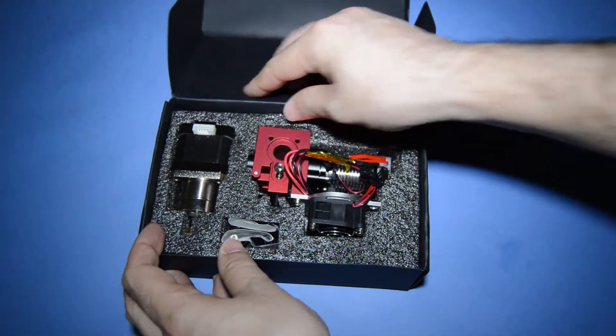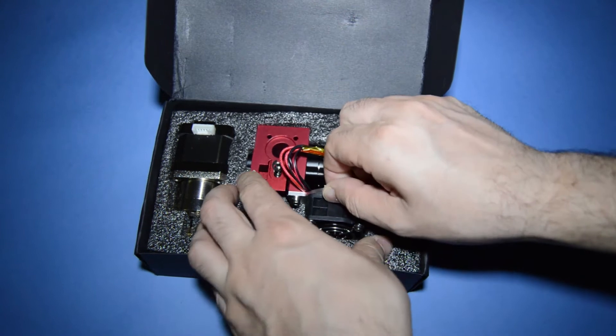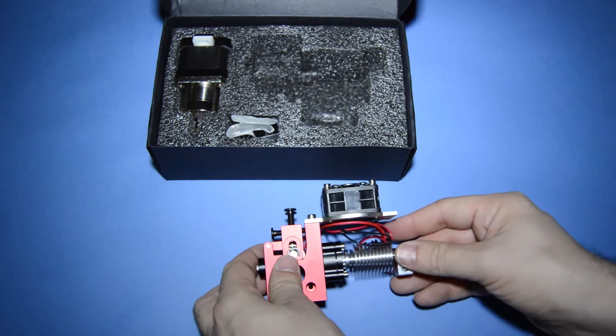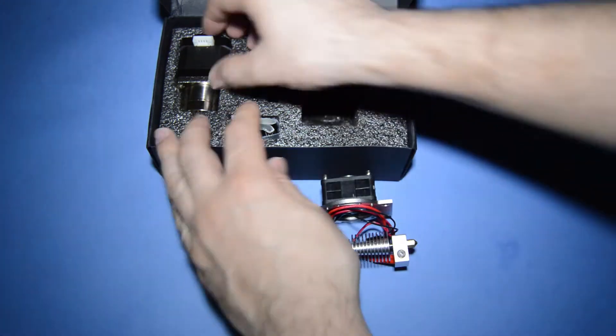So open the extruder package and take everything out. The extruder comes already mostly assembled and only the stepper motor needs to be installed.